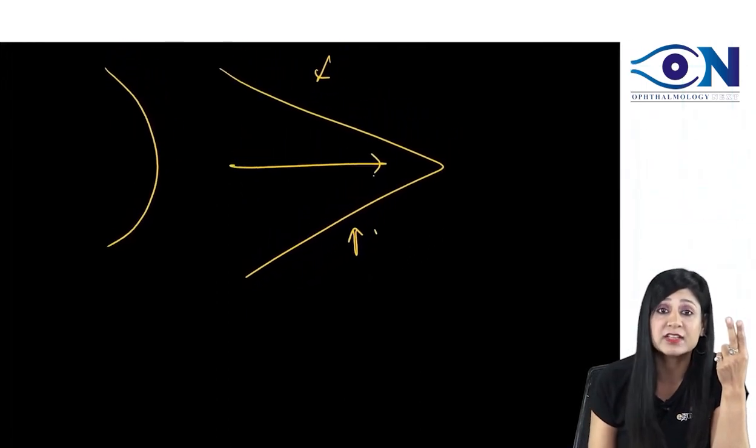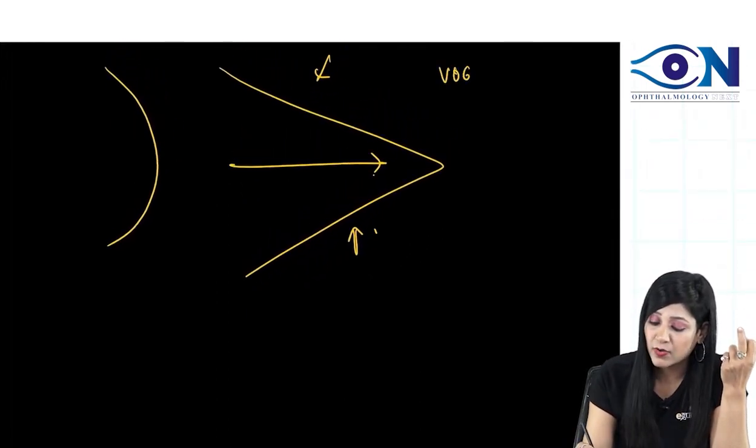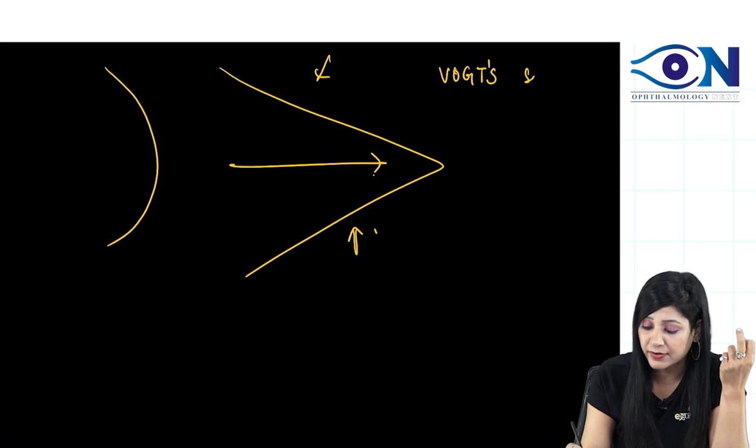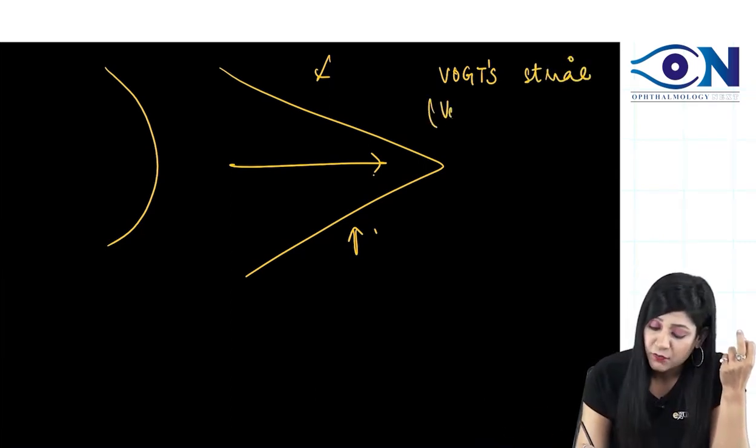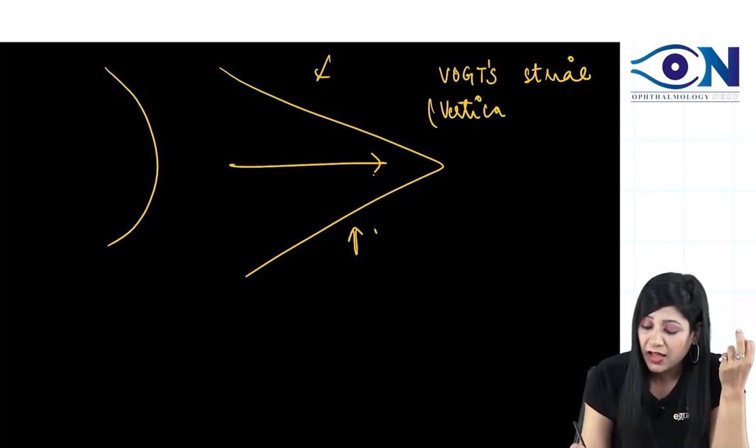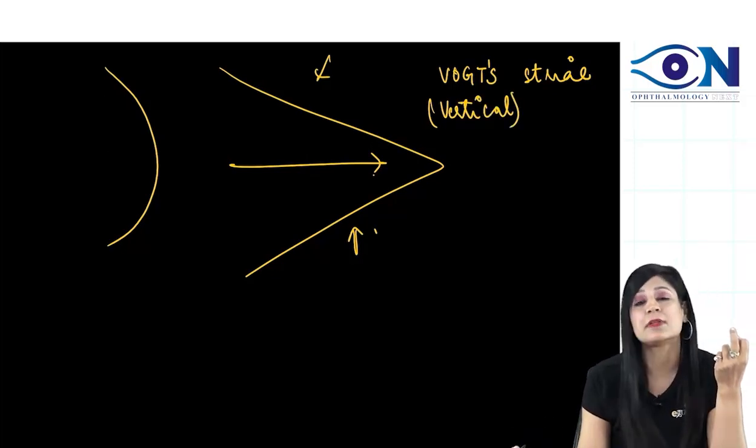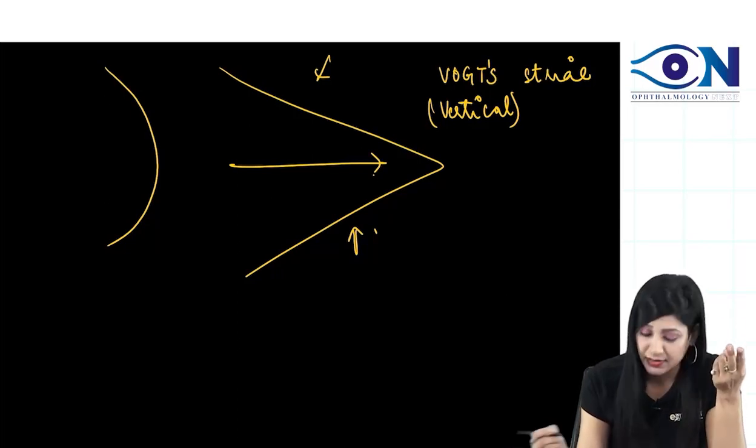Another important thing, what are the kind of stria you are going to get? You are going to get the vox stria. Vox means vertical like H for half and H for horizontal. Similarly, we have V for vox and V for vertical.